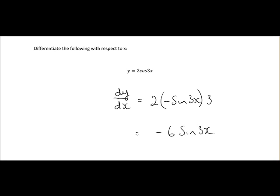Just to recap: we had 2cos(3x). Cos(3x) differentiates to minus sine(3x). We differentiate the angle beside the cos and multiply — when we differentiate 3x, we get 3, so we multiply by 3. 2 by 3 is 6, and with the minus sine(3x) that gives us minus 6 sine(3x).